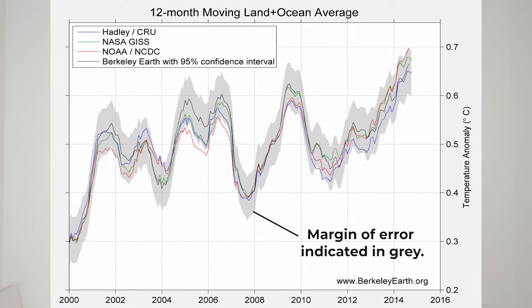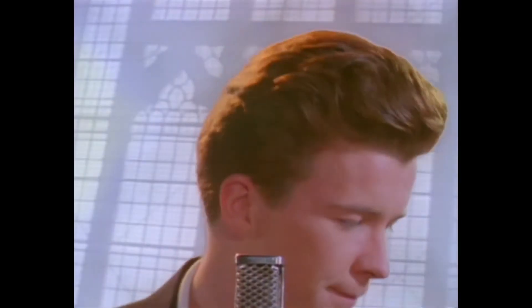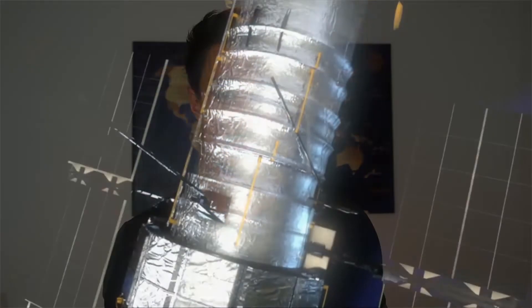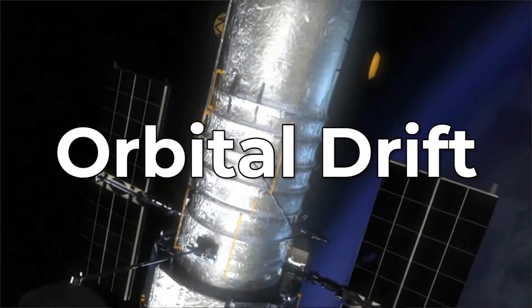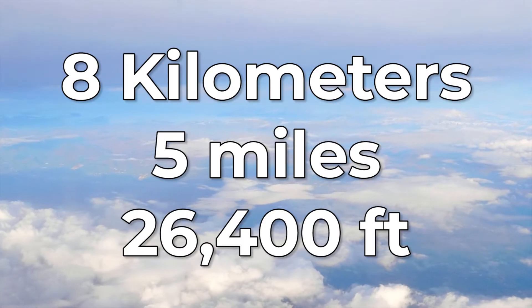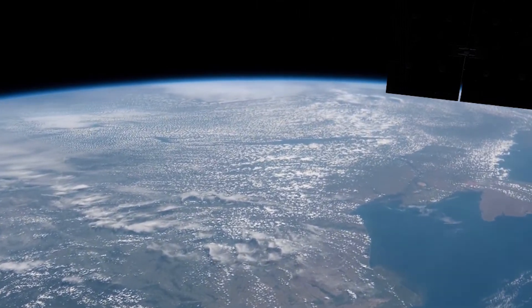Satellite data also has limitations. For one thing, it only goes back as far as the 80s. It also has to be adjusted for something called orbital drift, which can artificially introduce trends into the data. Additionally, satellites don't actually measure surface temperature. Instead, they measure the average temperature of the lowest 8 kilometers or 5 miles of the atmosphere — which is pretty high. Again, this is where temperature anomalies become useful, because although the exact temperature of such a large chunk of the atmosphere will be quite different from the temperature measured down here, the temperature changes — the anomalies — should track the changes at the surface.